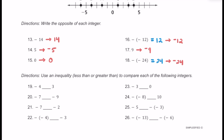For this next section, we're going to be going ahead and using an inequality — basically a less than or greater than symbol — to compare each of these given integers. We'll say the left number is less than or greater than the right number. For number 19, we have negative 4 and 3. Negatives are always going to be smaller than positives, so negative 4 is definitely less than 3. For number 20, we have negative 7 and negative 9. Negative 7 is to the right on the number line and negative 9 is to the left, so negative 7 is definitely going to be greater than negative 9.